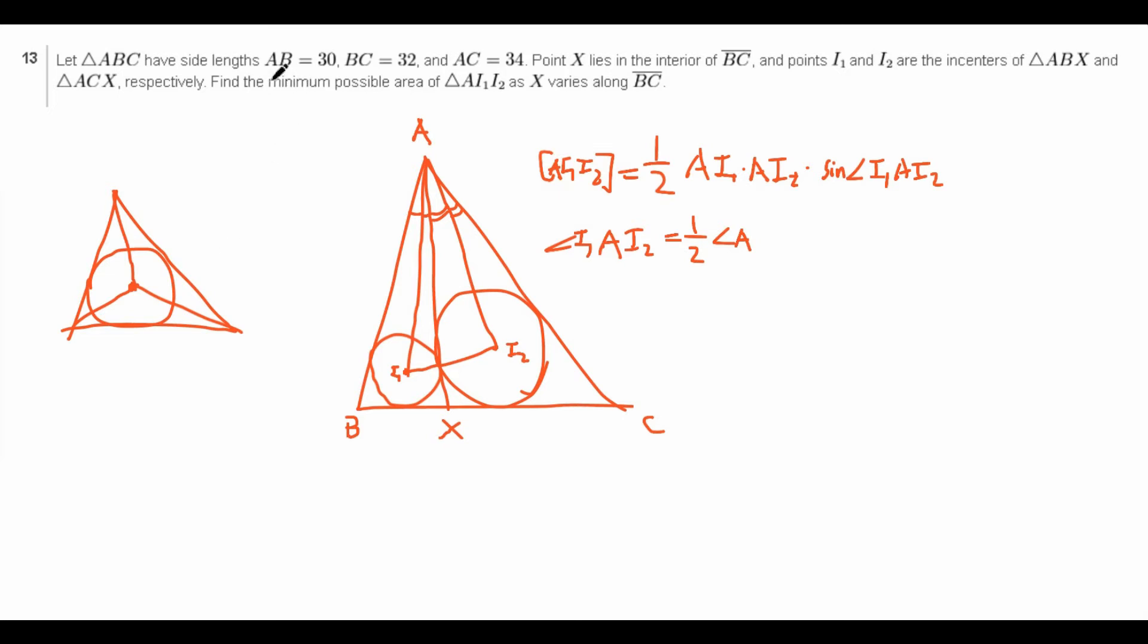So all we need to do now is to find the minimum possible value of AI1 times AI2. Now, AI1 and AI2, unfortunately, aren't that nice either. However, they are nice enough in that they are a pretty basic length that comes with when you have an in-center in any case. And if we think about it, since the triangle ABC is fixed at 30, 32, and 34 as the side lengths, respectively, then basically angle A is fixed.